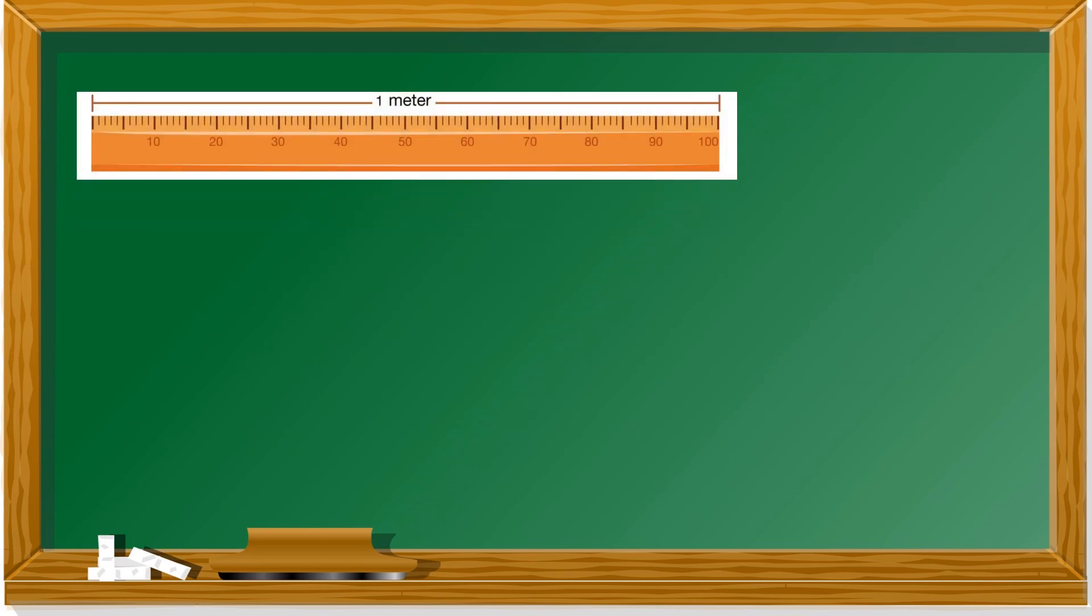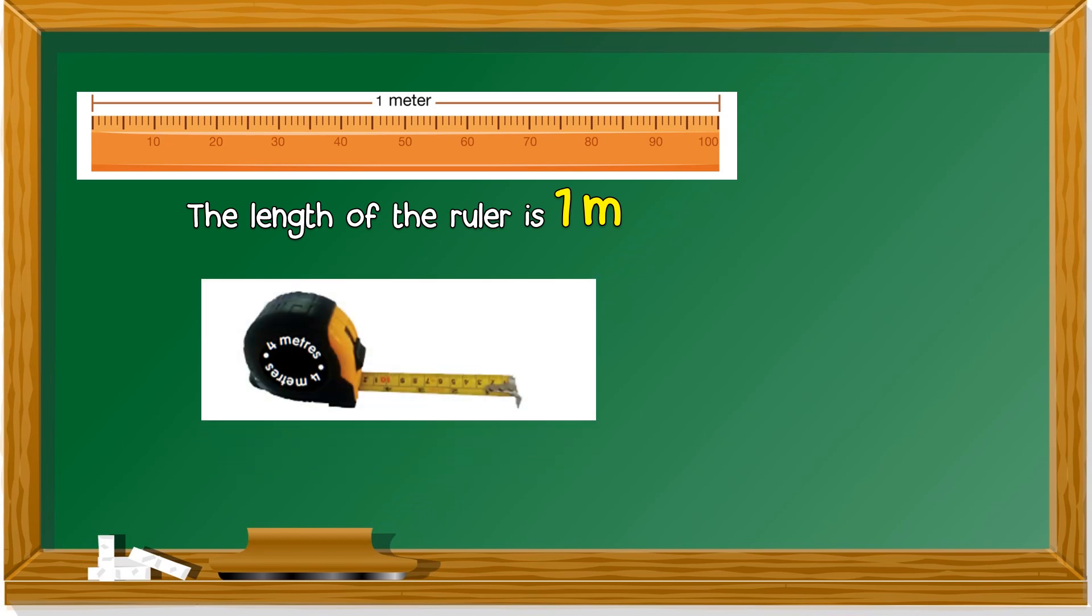Let's take a look at this. This is a meter ruler. So, the length of the ruler is 1 M, which is 1 meter. How about this? This is a measuring tape. It's written there, 4 meters. The length of the measuring tape is 4 M.